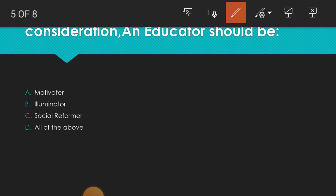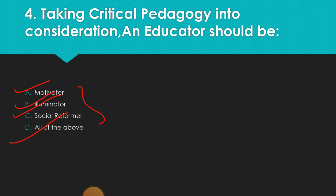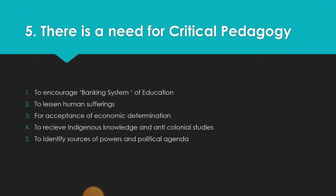A motivator — he or she should encourage students. An illuminator — he or she should enlighten students and be the source of enlightenment. A social reformer — he or she should start reformation and change the world. So we can say all of the above. Here also the correct answer is all of the above.